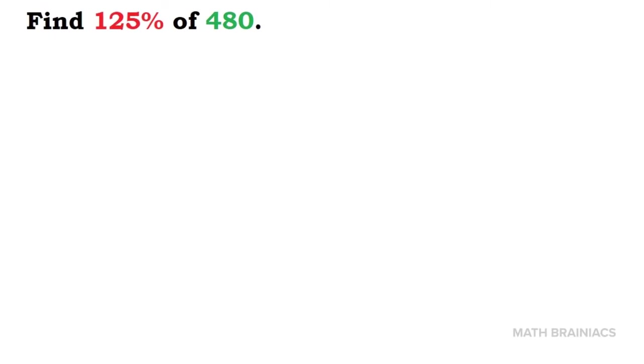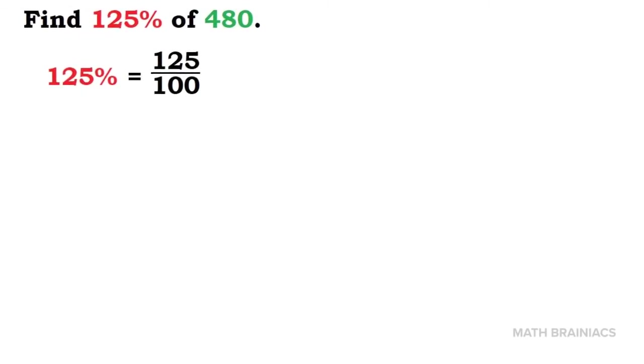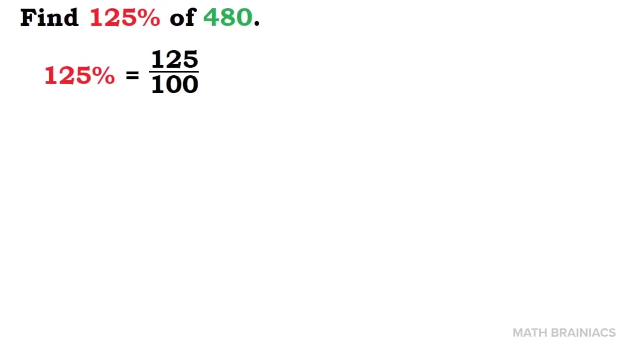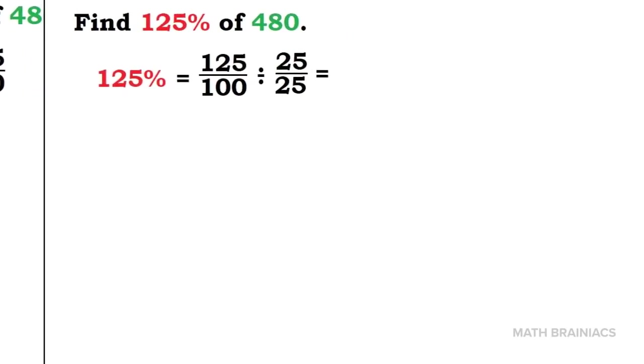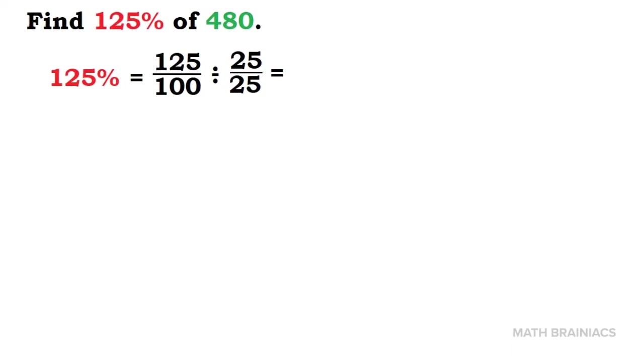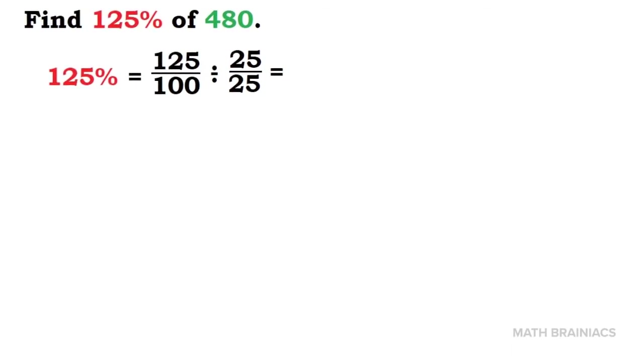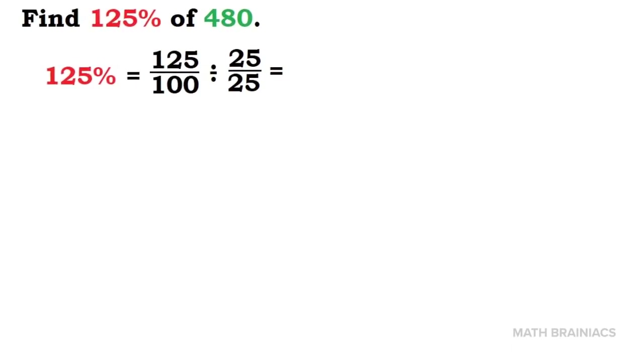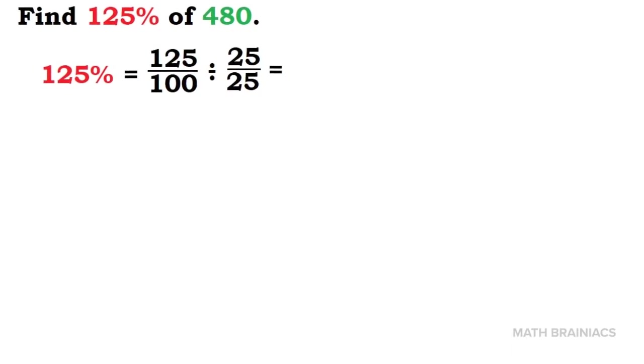Let us work on another example so that you can understand it well. Find 125% of 480. Converting 125% into fraction is 125 over 100. To simplify 125 over 100, we are going to look for the common factor of the numerator and denominator, and in this case, it is 25.